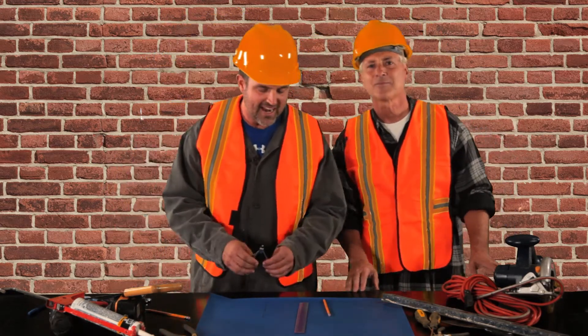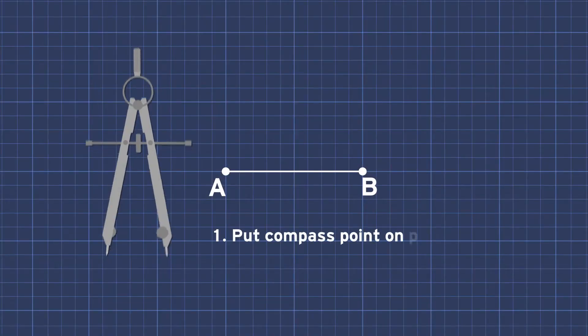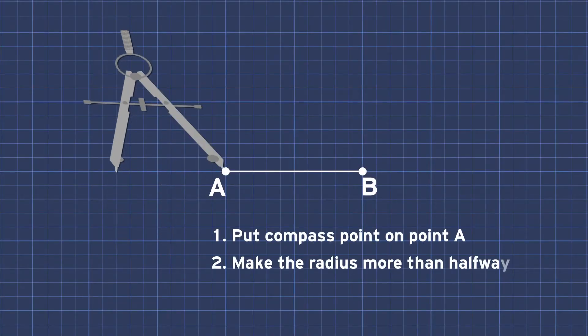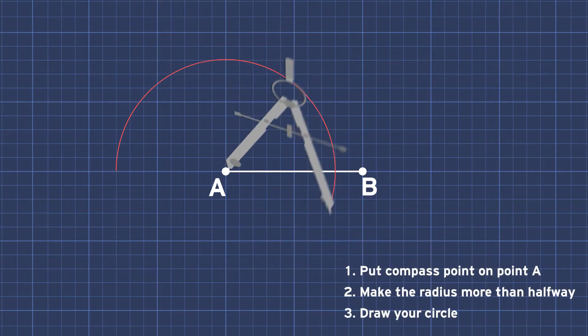Oh, this compass. Okay. Oh yeah, I got it. I put the compass point on point A. I make the radius more than halfway, and then I draw myself a circle. Got it.